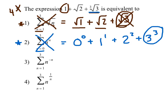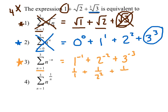Let's try the third example. Substituting n equals one gives one to the negative one, plus two to the negative two, plus three to the negative three. Rewriting as fractions: the first term is one over one, the second is one over two squared, the third is one over three cubed. One over 27 is not equivalent to the cubed root of three, so we can successfully eliminate this choice.